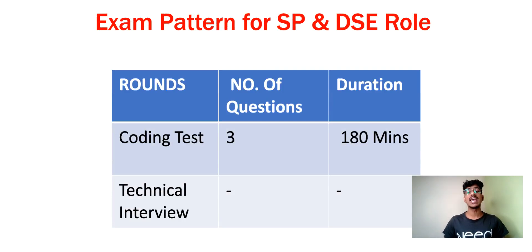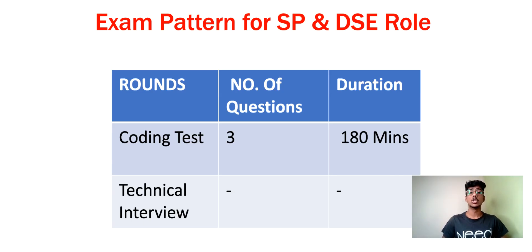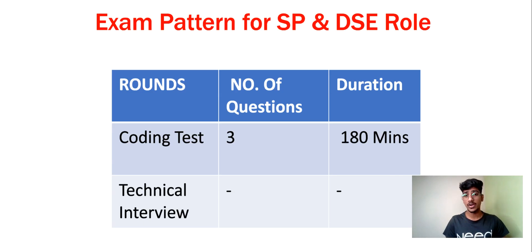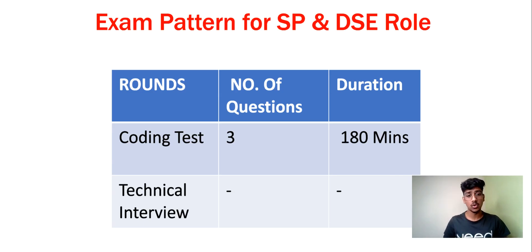Here you can see the exam pattern for SP and DSE roles. There are multiple rounds. The first round is a coding test with three questions, and the duration provided is 180 minutes — roughly one hour per coding question. After the coding test, if you qualify, you will be invited for a technical interview. If you don't qualify the coding test, you will not be invited for the interview.